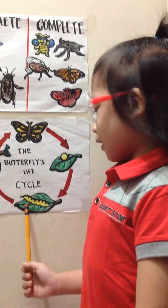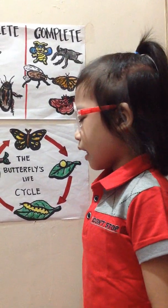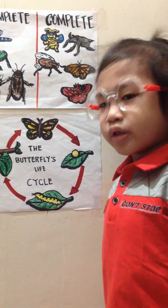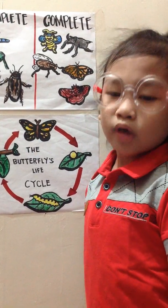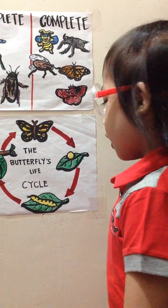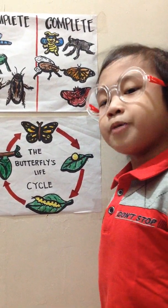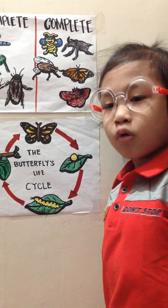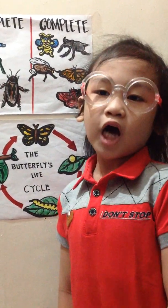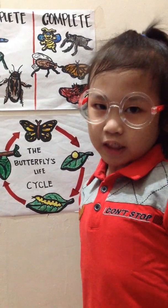Let's talk about the second stage: larva. This is also called the caterpillar or feeding stage. The job of the caterpillar is to eat, eat, eat, and eat. It grows 100 times in this stage.